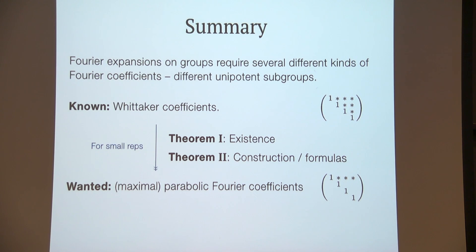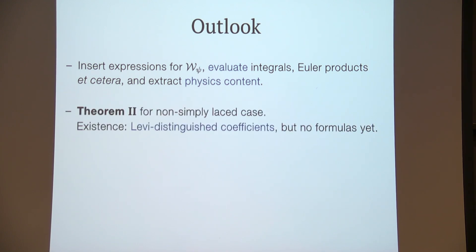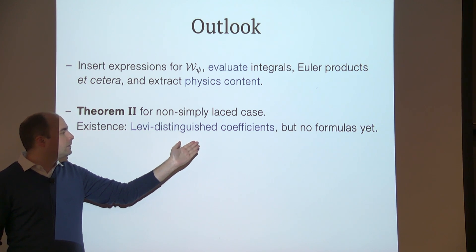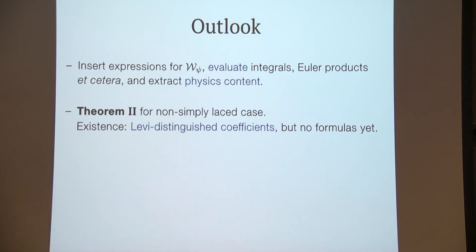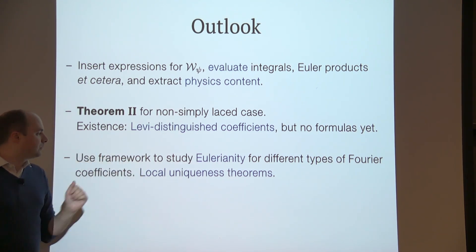In the future, we would like to insert the known expressions for the Whittaker coefficients, evaluate the extra integrals that appear in the relations, evaluate all the Euler products, et cetera, and extract the physics content. We would also like to get a generalization for the non-simply-laced case. Remember, Theorem I tells us that the parabolic Fourier coefficients can be determined in the so-called Levi-distinguished coefficients, but we have no formulas yet. Lastly, we would like to use the framework we have to study factoriality—how the Fourier coefficients factorize for different types—and also local uniqueness theorems.